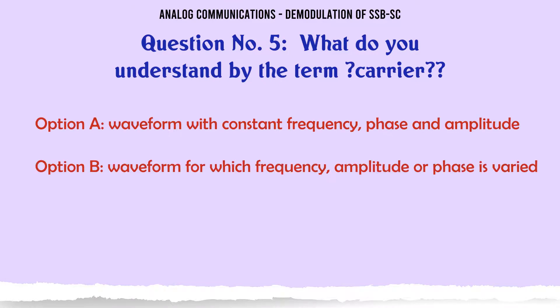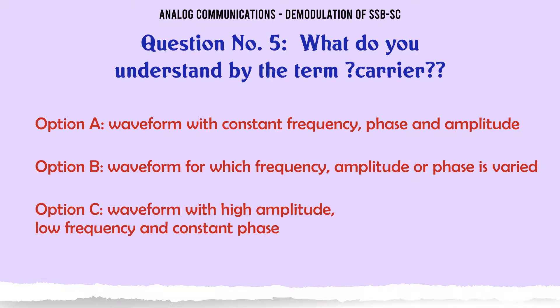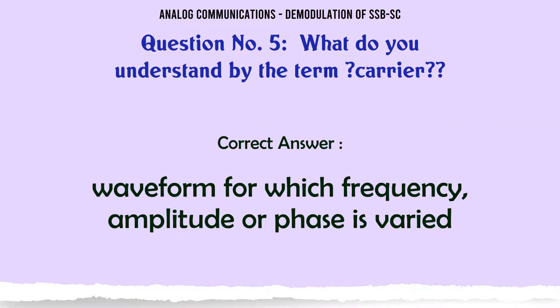What do you understand by the term carrier? A. Waveform with constant frequency, phase and amplitude, B. Waveform for which frequency, amplitude or phase is varied, C. Waveform with high amplitude, low frequency and constant phase, D. Waveform to be transmitted. The correct answer is: waveform for which frequency, amplitude or phase is varied.